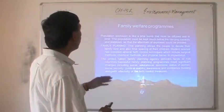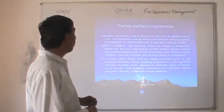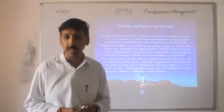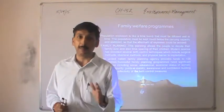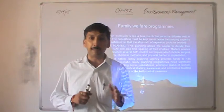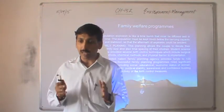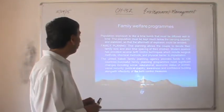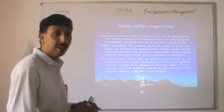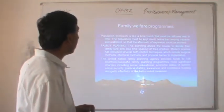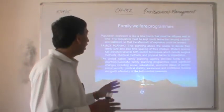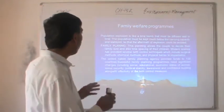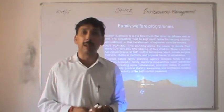How can we control this? It is like a time bomb which must be diffused well in time. The population must be capped below the carrying capacity and stabilized so that the aftermath of an explosion could be avoided. The first step is family planning, which allows couples to decide their family size. Modern science has provided several birth control techniques including surgical methods, chemical methods, and physical barrier to implantation. The United Nations Family Planning Agency provides funds to 135 countries. Successful family planning programs need significant changes in social, educational, and economic status of women, social security, political stability, and awareness along with effective birth control measures.